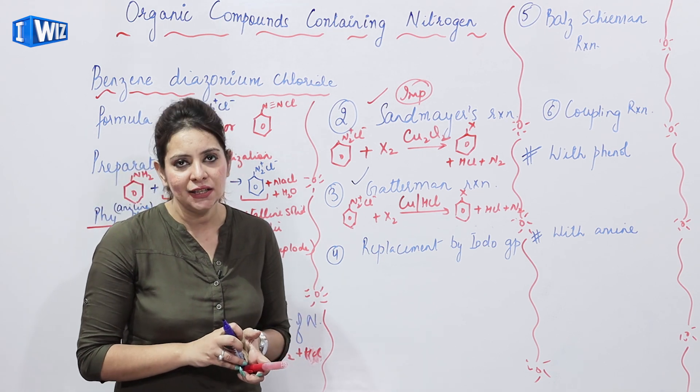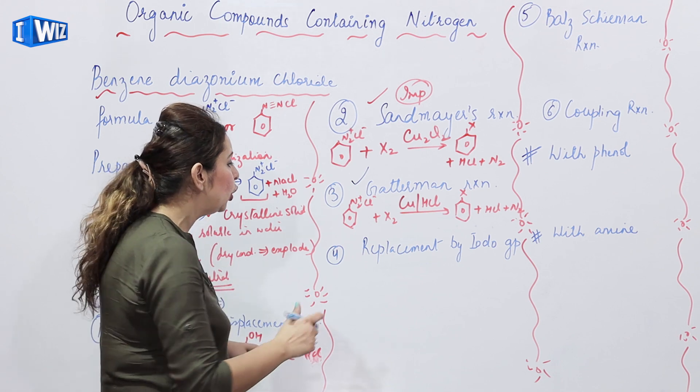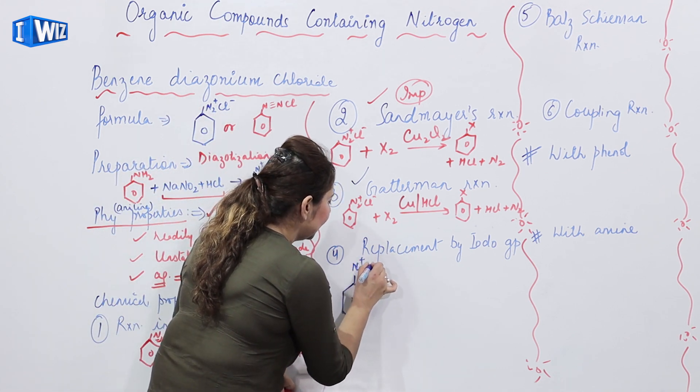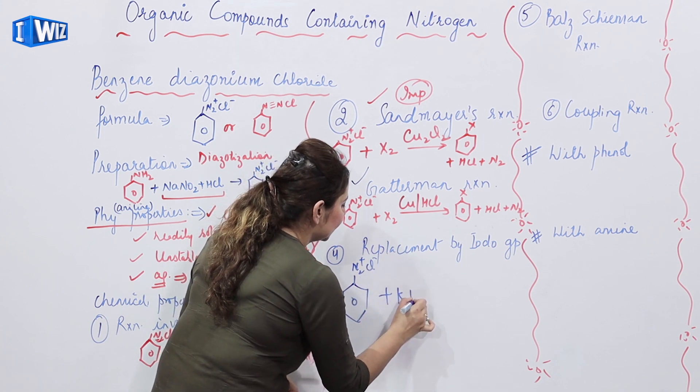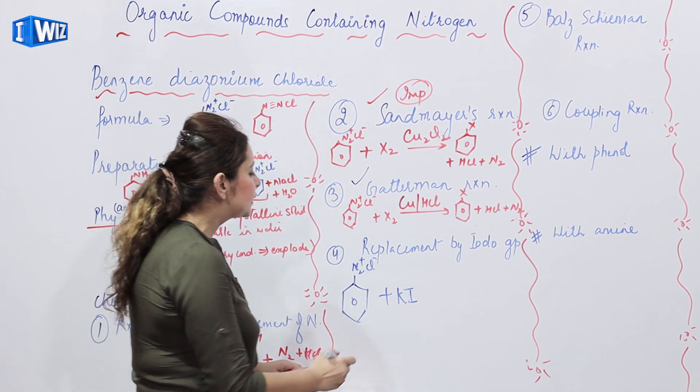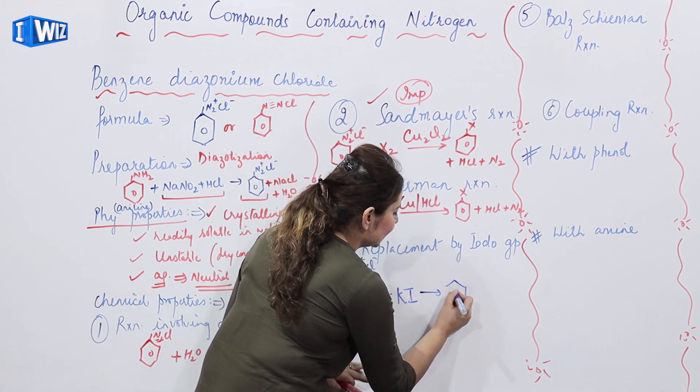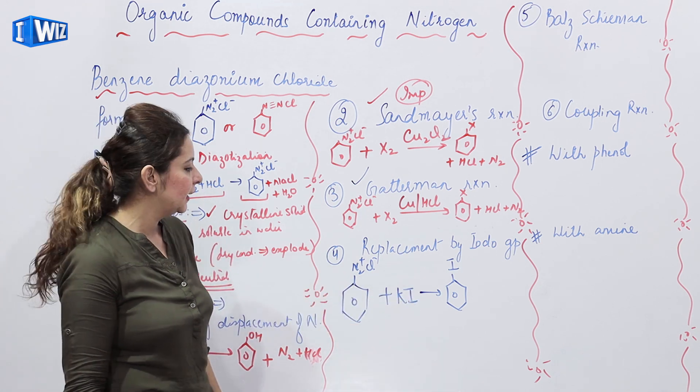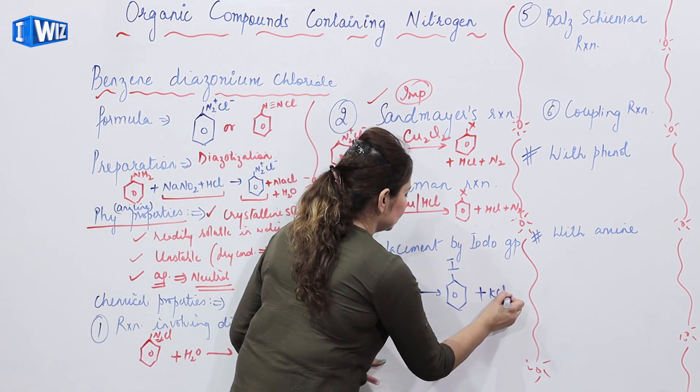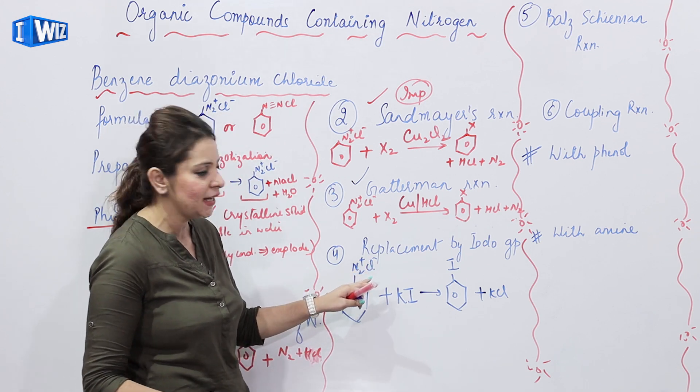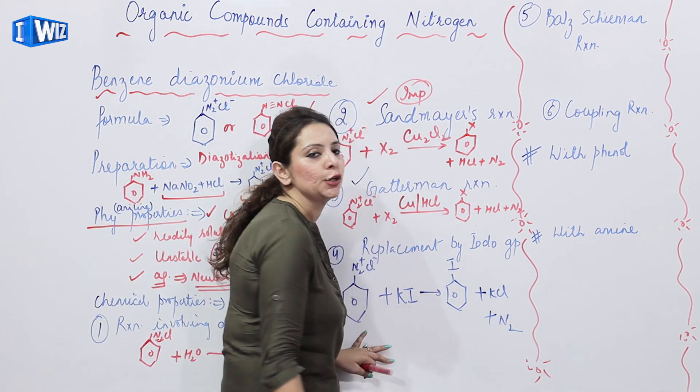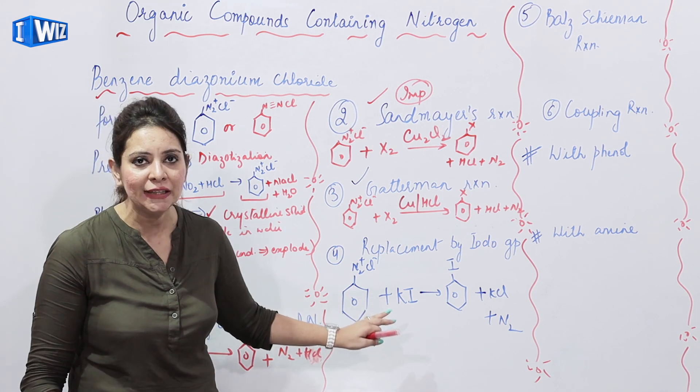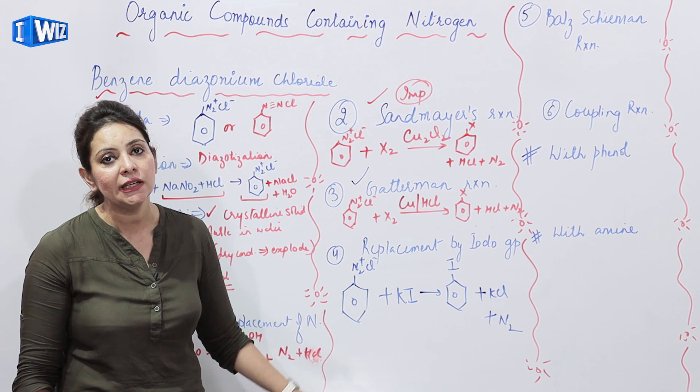If you want to add iodine, you want to do iodination, then iodination we cannot do directly. For iodination, we have to react with iodine containing compound. Let's say, potassium iodide. When we do it with potassium iodide, then halogenation occurs, and we get iodobenzene. And along with that, what will be the side products? You can see K and Cl are there, obviously KCl, and along with that, we'll get N2. So this is the replacement by iodo group. It doesn't have any specific name, but still, it is important, it can be used in certain conversions.